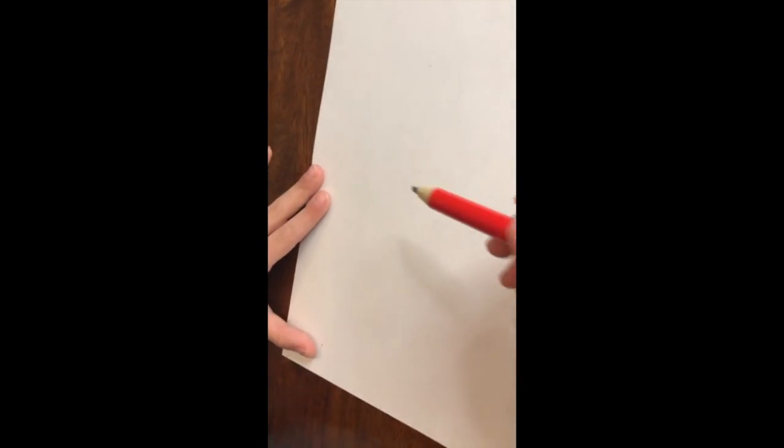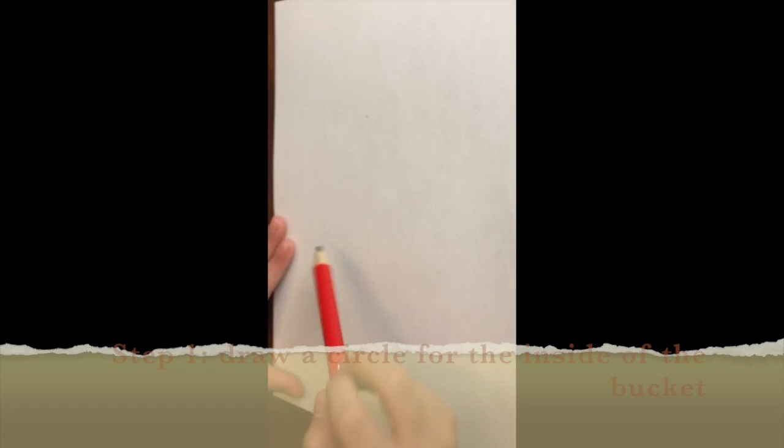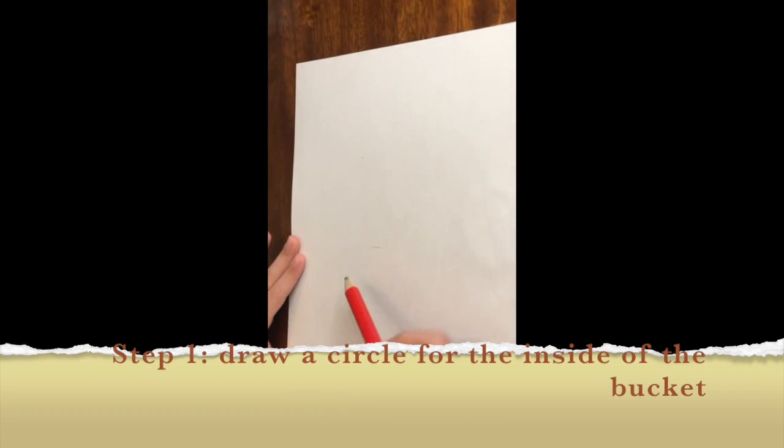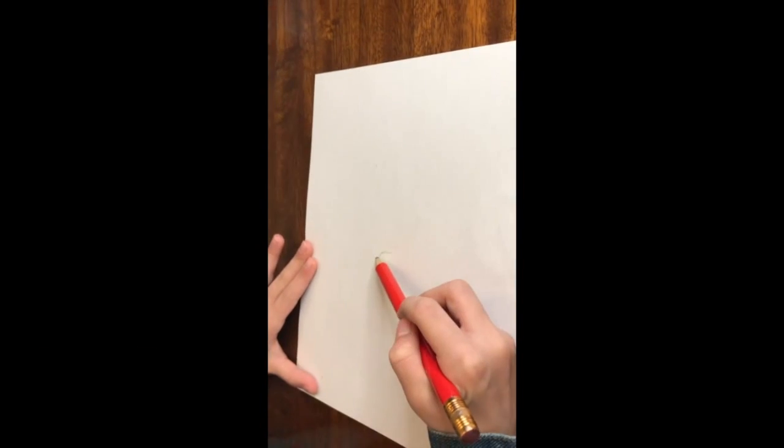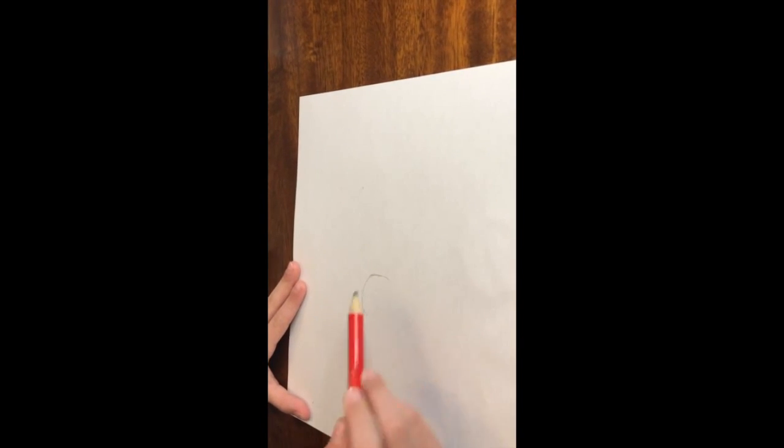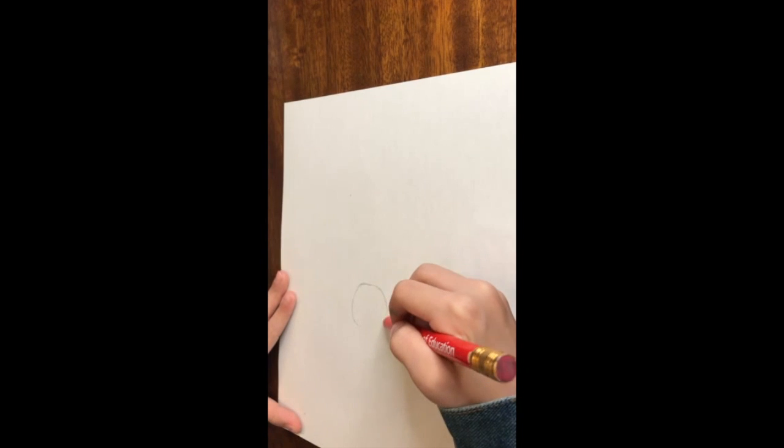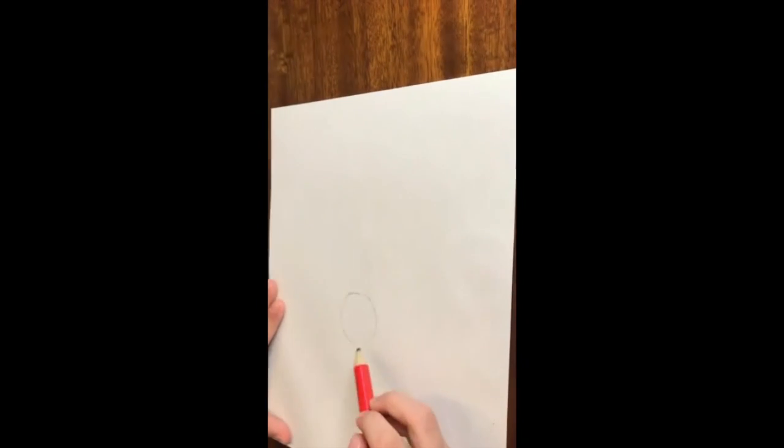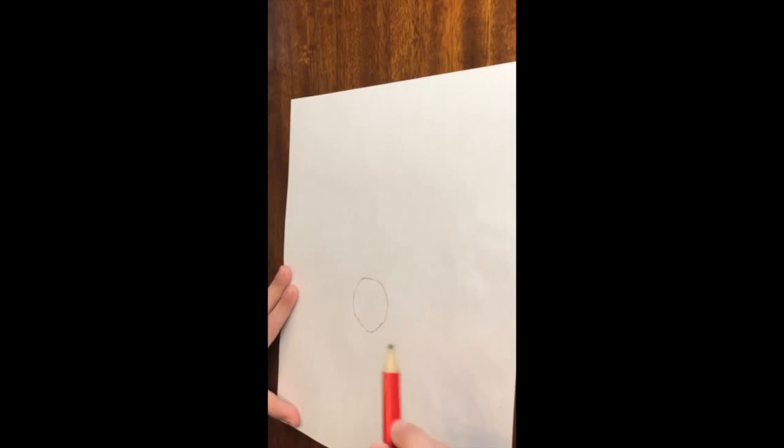Okay, so step one. You're going to make a circle right there. Just make a circle. This is not for its head, this is for the inside of its bucket.